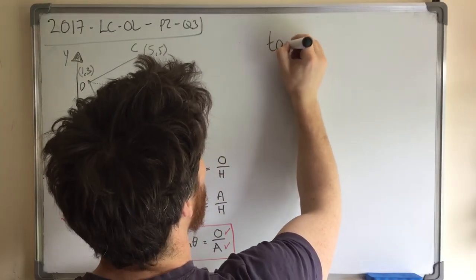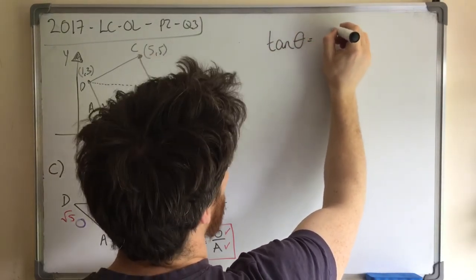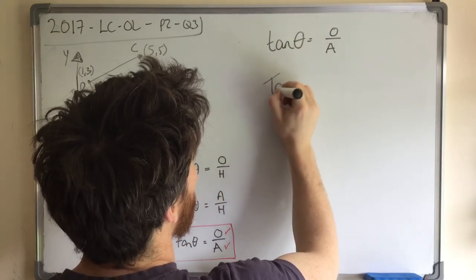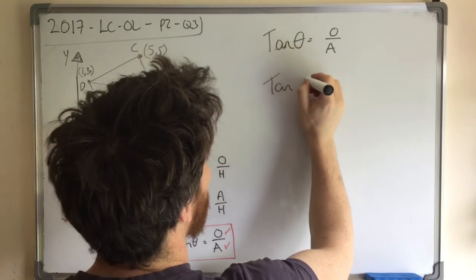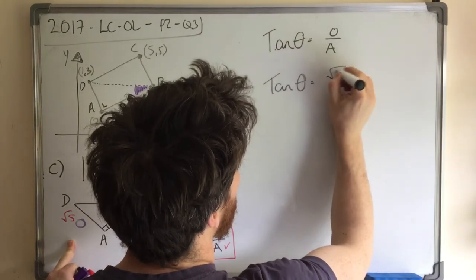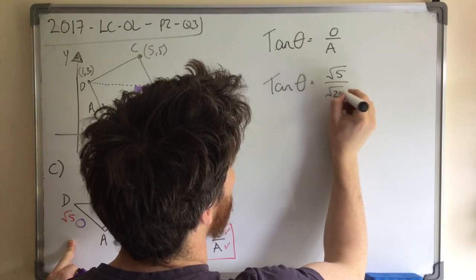So I'm going to say tan of theta equals O over A. So I'm going to say tan theta equals the opposite, which is square root 5 over square root 20. Now, this is a nice indices rule as well.